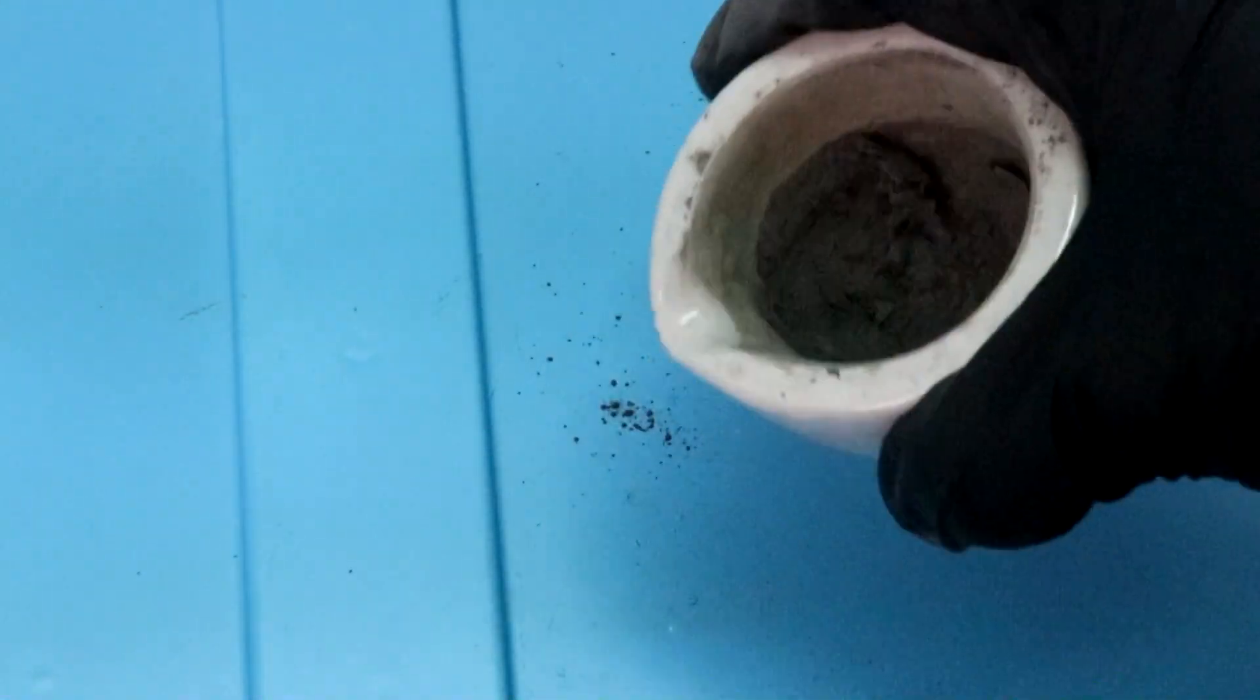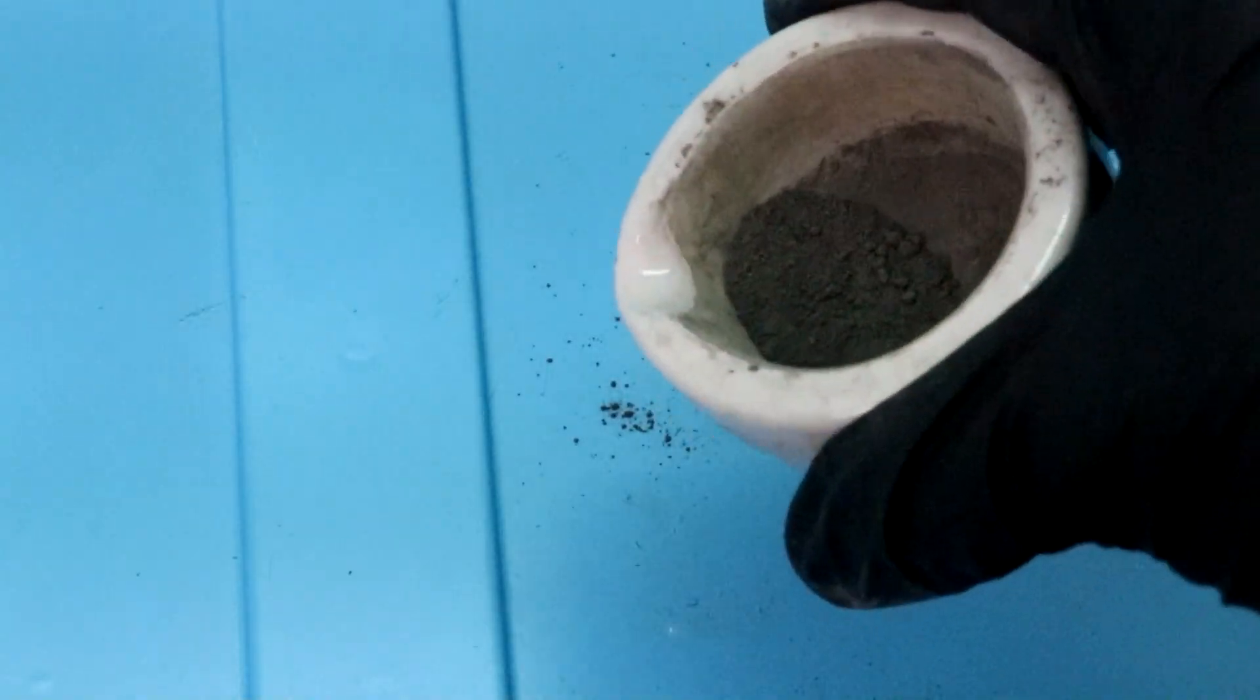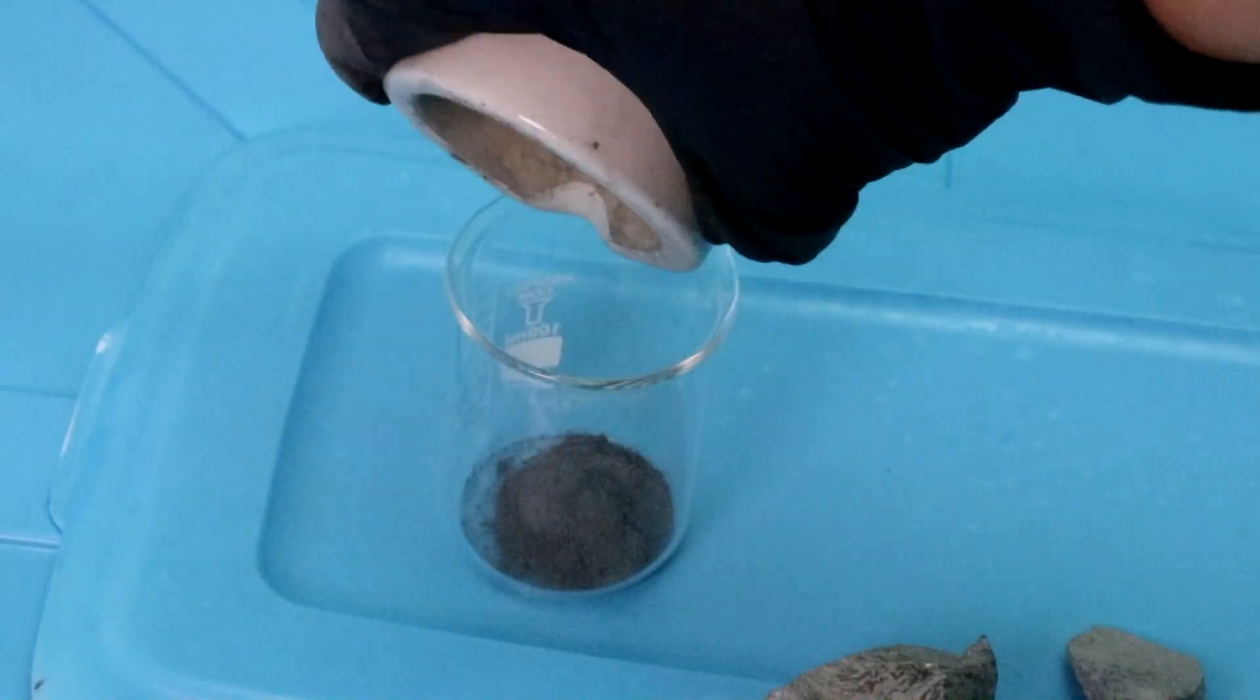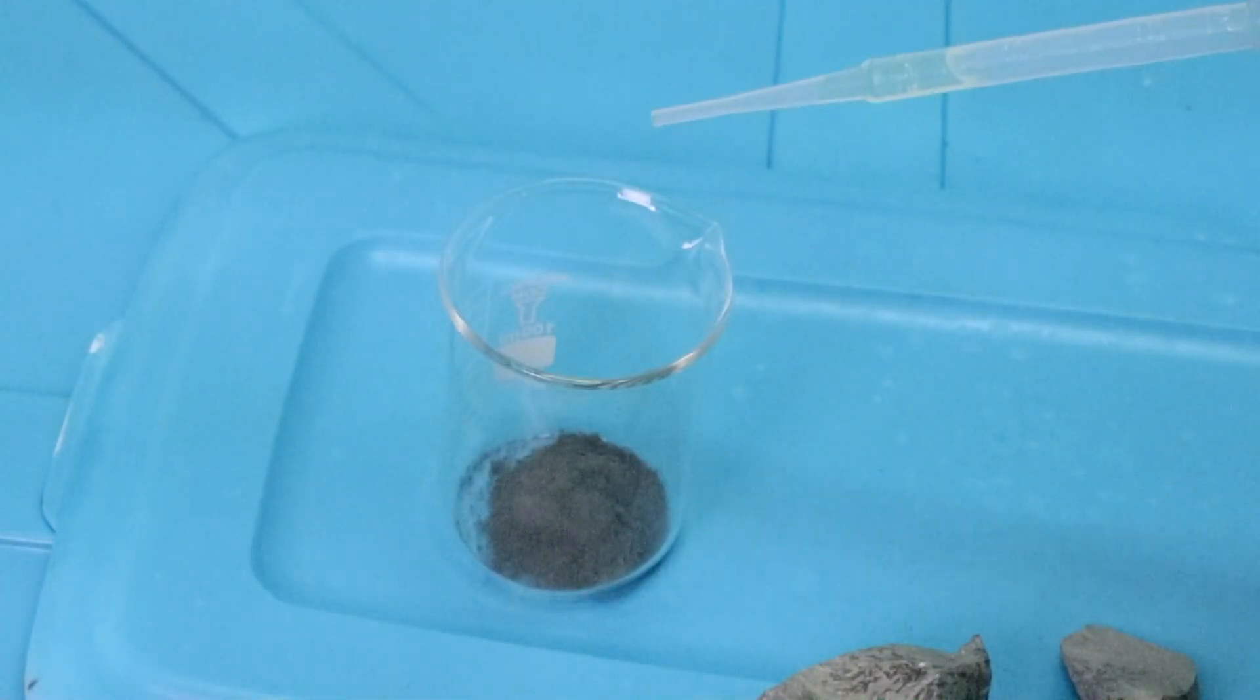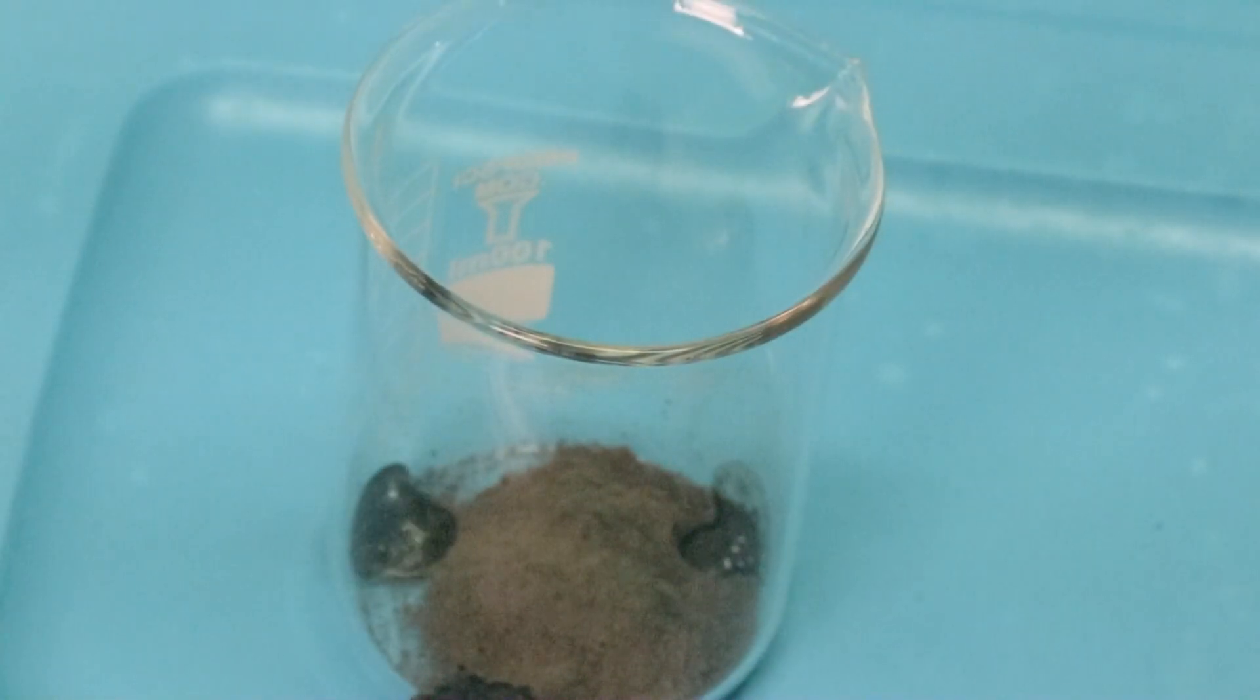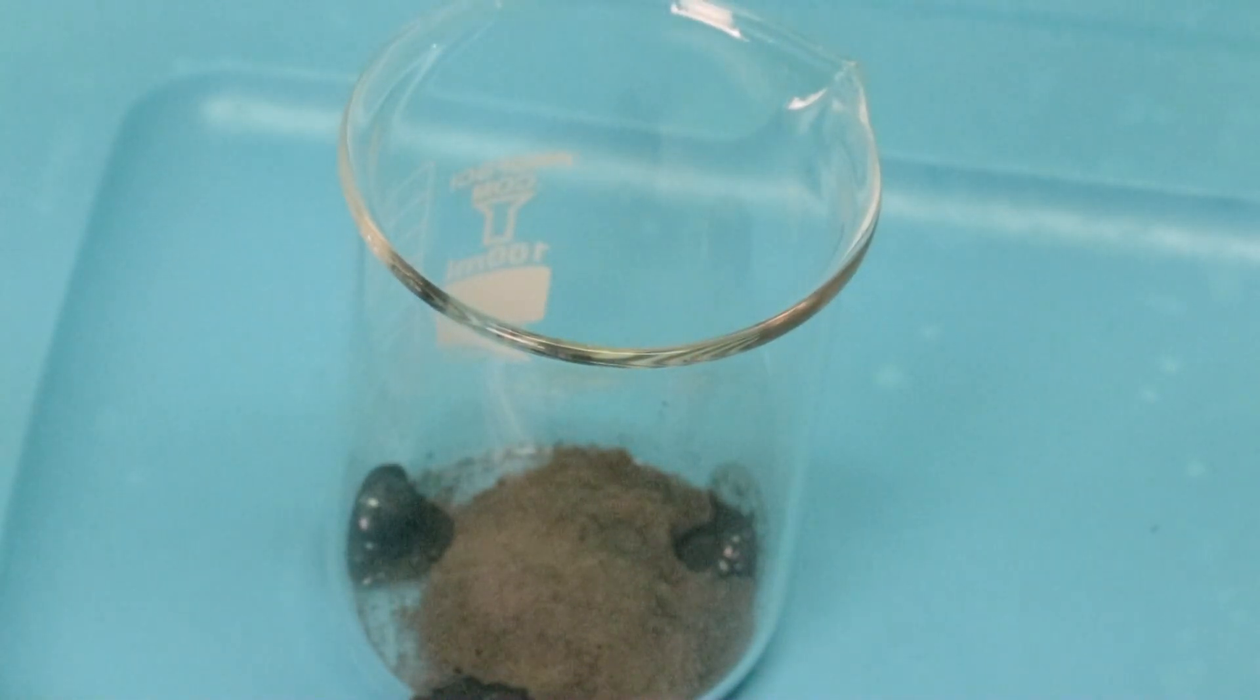Okay, so now that we've crushed our ore into a grayish powder, let's transfer it over into a beaker. And now when you drop in a bit of acid, you can observe that it bubbles profusely. It's destroying our acid.